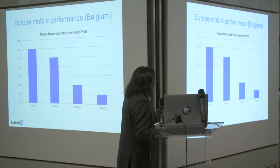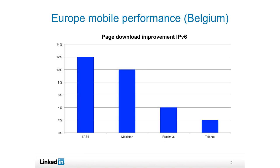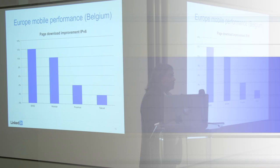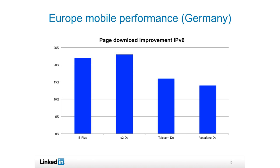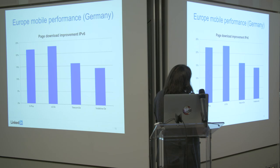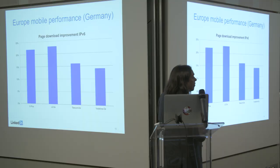We started looking at other places around Europe — Belgium. You can see these are probably the most friendly providers on the mobile side, with huge performance improvement over v6 versus v4. We said, let's see what Germany is doing. Germany shows about the same picture. When we say 20%, what does it mean exactly? It means that the page download time for v6 is 20% better than v4 — so it's around 80% of the time over v6.